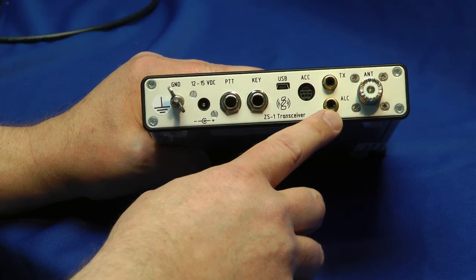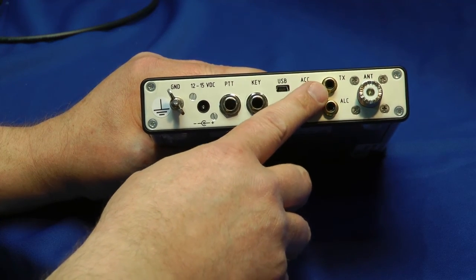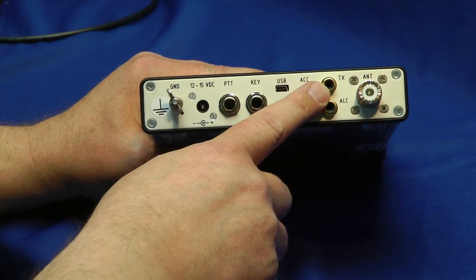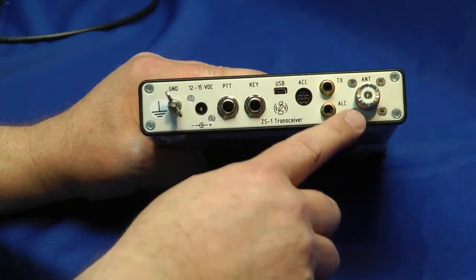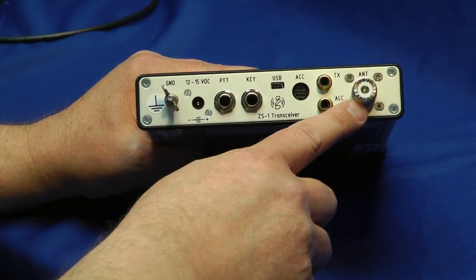We have ALC for amplifier adjustments and control, and of course, your TX. This is your key line for an external amplifier. And of course, the SO-239 antenna jack.